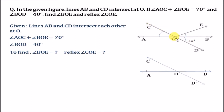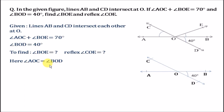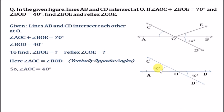Since lines AB and CD are intersecting each other at O, we can use the property of vertically opposite angles. As we know, angle BOD is given as 40 degrees. Angle AOC is vertically opposite to angle BOD, so angle AOC equals angle BOD. Therefore, angle AOC is also equal to 40 degrees.